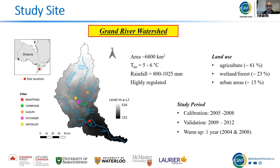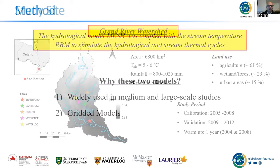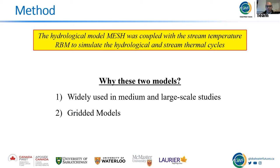We want to compare it with the impact of stream temperature model parameters, and basically see if using a single hydrological model configuration to force a stream temperature model is a justifiable approach or not. The study site is the Grand River watershed, the largest watershed in southwestern Ontario — area of about 6,700 square kilometers, precipitation about 1 meter, average air temperature 5-6 degrees Celsius, land use mainly agriculture, and a highly regulated catchment with several dams for flood control and power production.